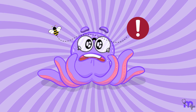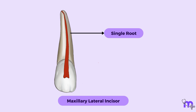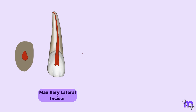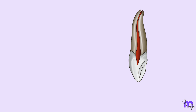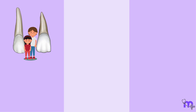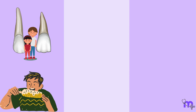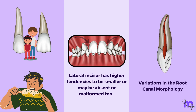Let us also discuss the pulp morphology. The maxillary lateral incisor possesses a single root housing a single canal. Its pulp chamber closely resembles that of the central incisor, although it differs in the incisal outline, which is somewhat more rounded. The root canal has a smaller dimension and typically appears rounded or oval in cross-section. Towards the apex, the canal tends to curve in a palatal direction. Remember: the lateral incisor is a smaller cousin of the central incisor which supplements the cutting action of the anterior teeth. It has higher tendencies to be smaller, absent, or malformed, and the variations in root canal morphology make it unique and require care during treatment.